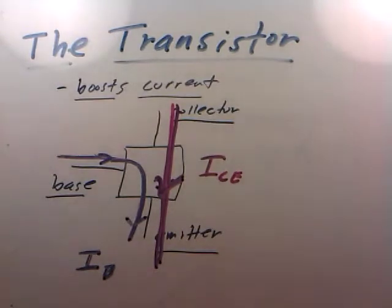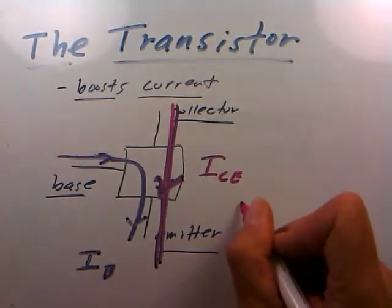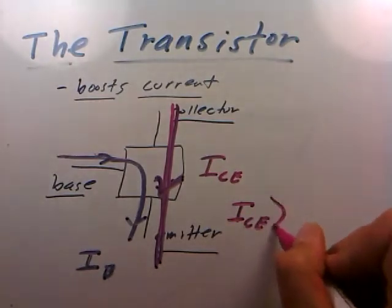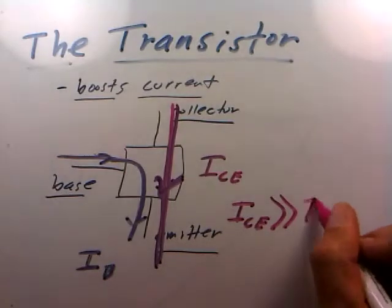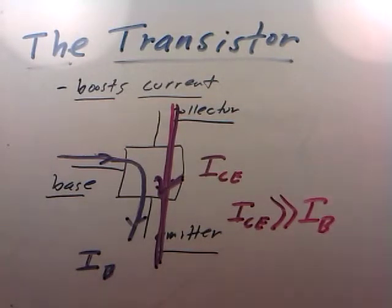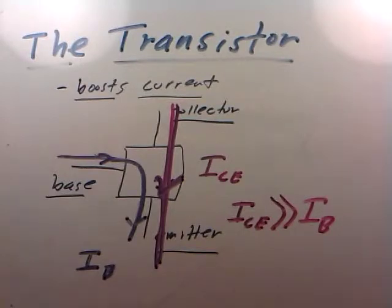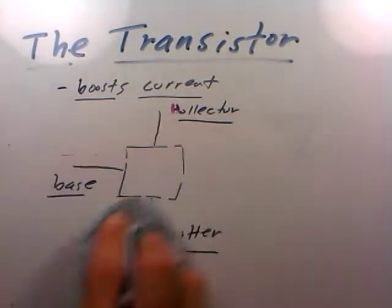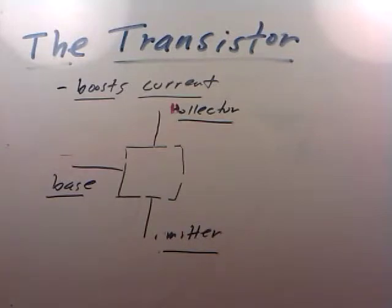We'll call this larger current I_collector-emitter. In normal transistor action, the current that runs through the collector-emitter path is always going to be much, much greater than the current that was injected into the base. And that's it — that's all we really need to say about the transistor. It's a device that sits between two current loops and makes the current in one much larger than the current in the other.